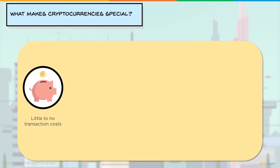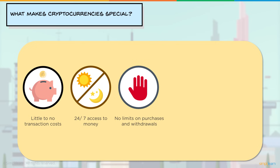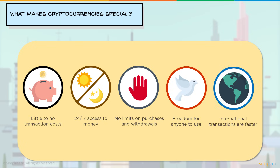What makes cryptocurrency so special? Firstly, there's little to no transaction cost — unlike digital wallets where transferring money to a bank account costs a fee. You have 24/7 access to money, unlike a bank you can't visit at 3 a.m. There are no limits on purchases and withdrawals. There's freedom for anyone to use — setting up a bank account requires paperwork and documentation, but with cryptocurrencies all of that can be avoided. And international transactions are faster — wire transfers take about half a day, but with cryptocurrencies it only takes minutes or seconds.